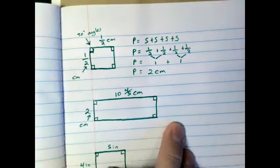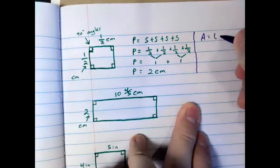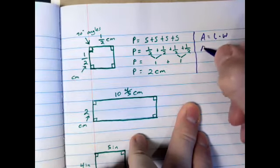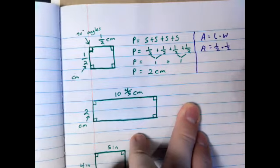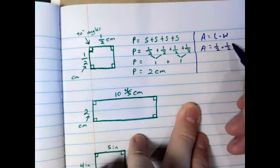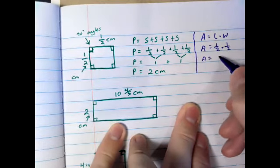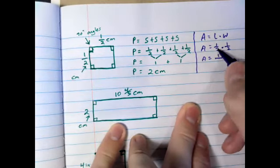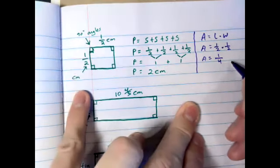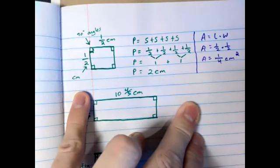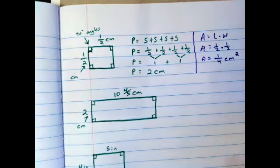Let's look at the area here. Area equals length times width. Area equals 1/2 times 1/2, or numerator times numerator, denominator times denominator. Area equals 1 times 1 is 1, 2 times 2 is 4. So area is 1/4 centimeters cubed or cubic centimeters. Easy peasy.